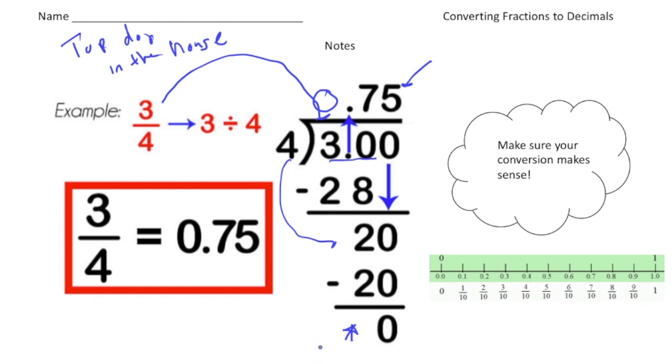So let's make sure that this makes sense now. Well, three fourths, I know is more than one half. So I know one half would be two fourths. So three quarters on the number line should be right about here. And our decimal is 0.75, which is going to also be right about there. So that is definitely the correct solution.